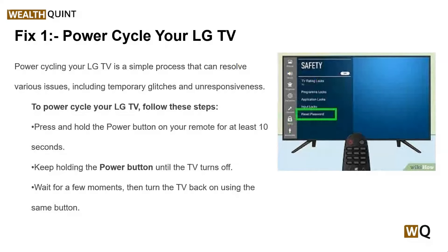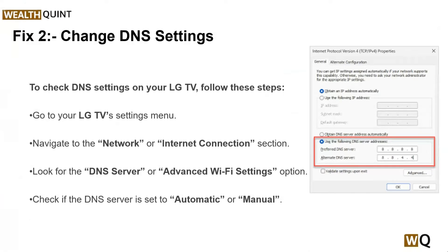Solution two is to change your DNS settings. If you are still experiencing issues, try changing your DNS settings on your LG TV. This can help resolve issues with hostname resolution. First, go to your LG TV settings menu and navigate to the network or internet connection section. Look for the DNS servers or advanced Wi-Fi settings option and check if the DNS servers are set to automatic or manual.